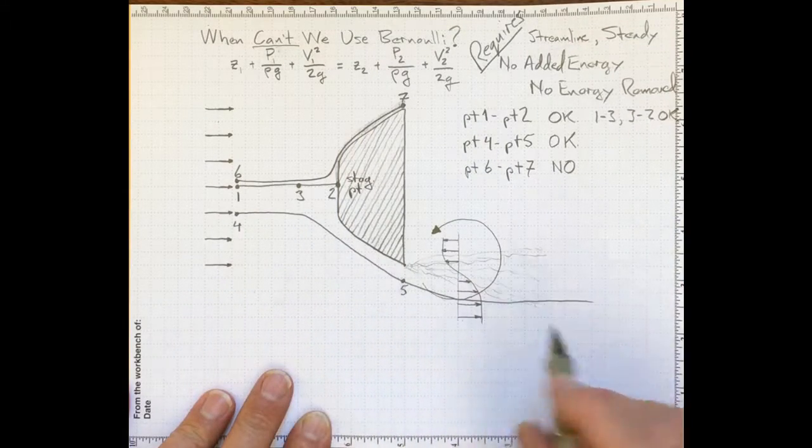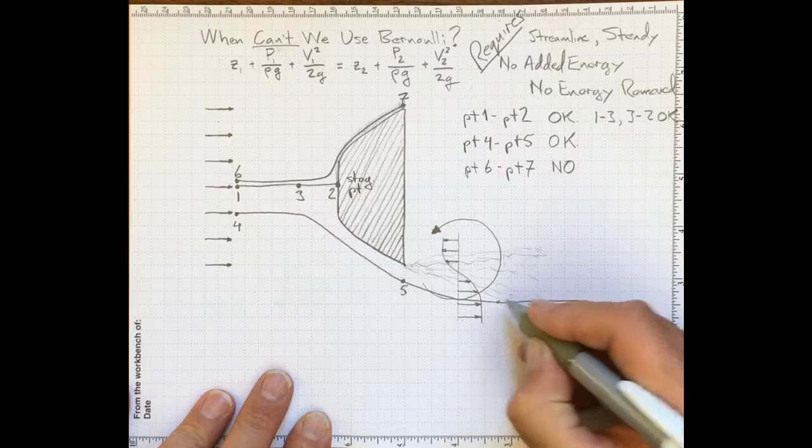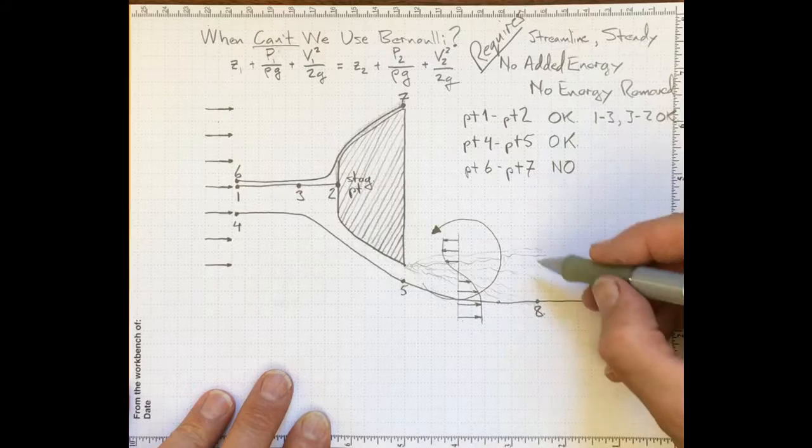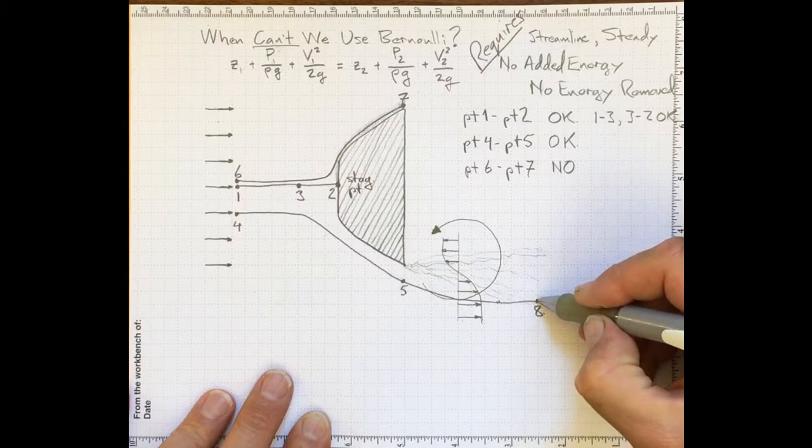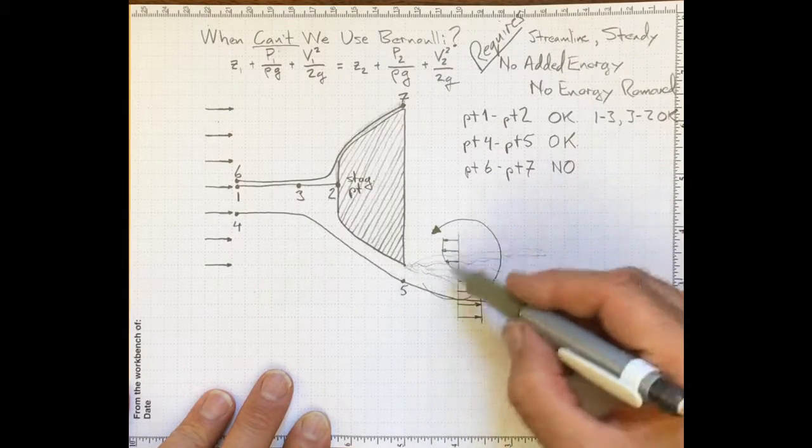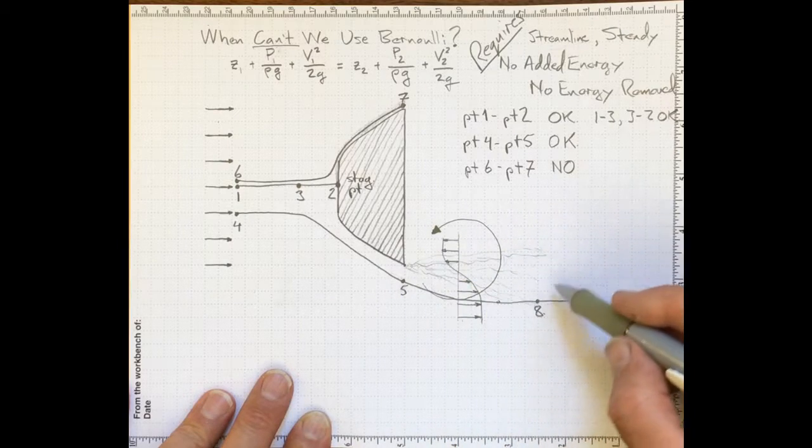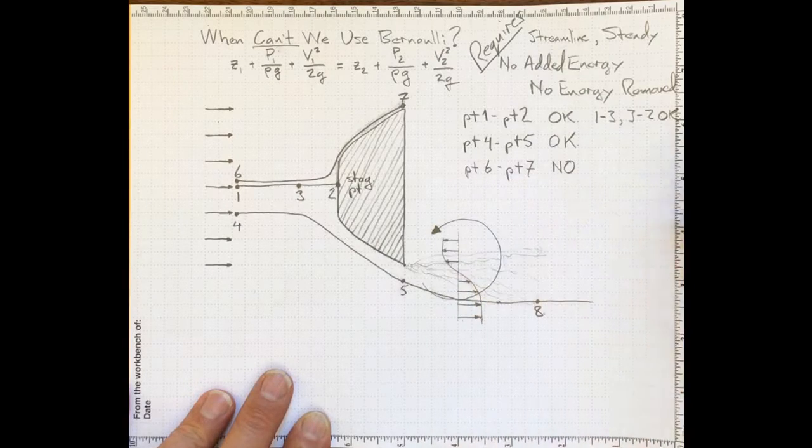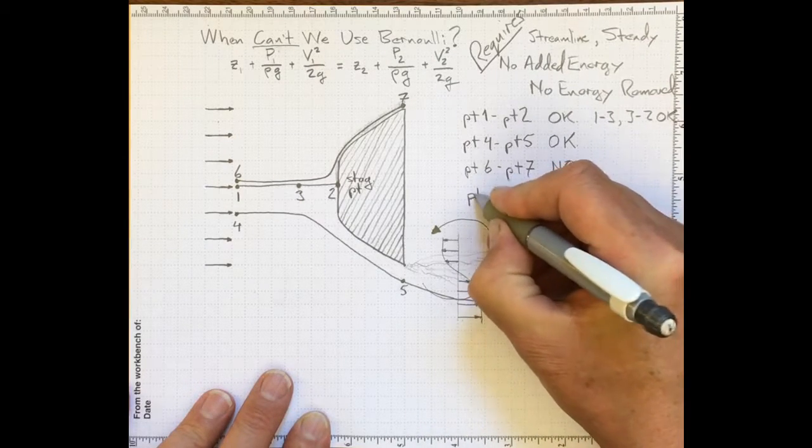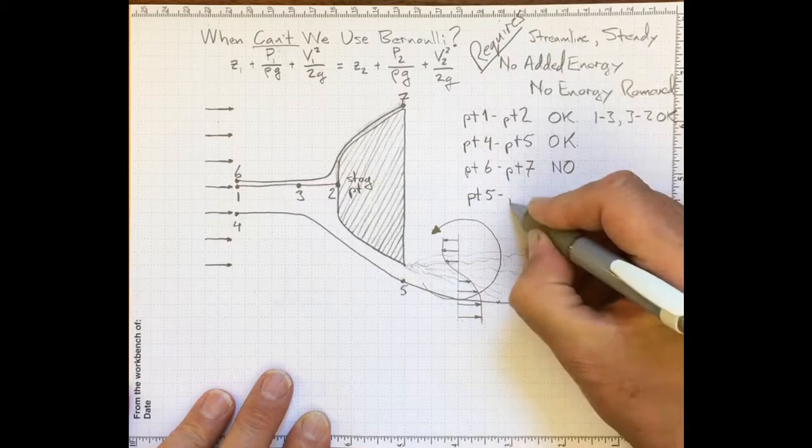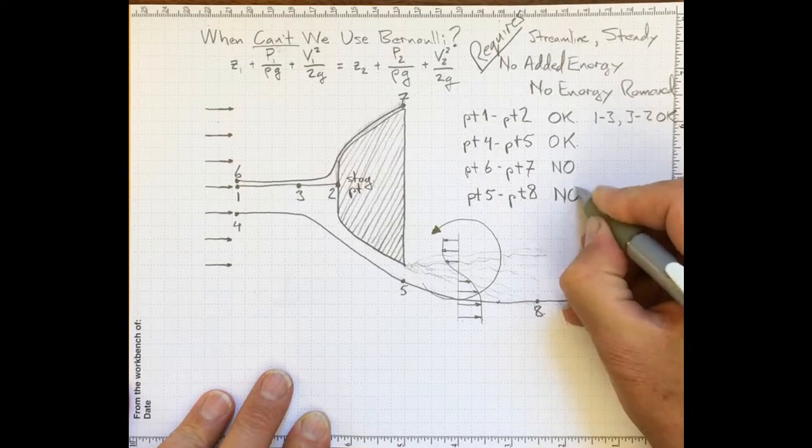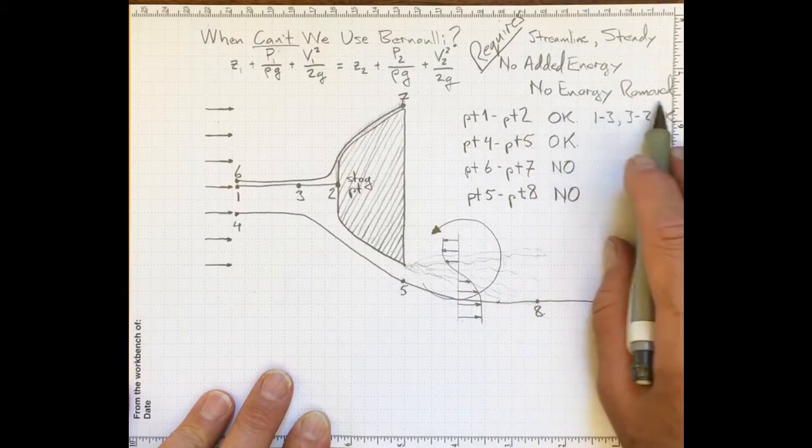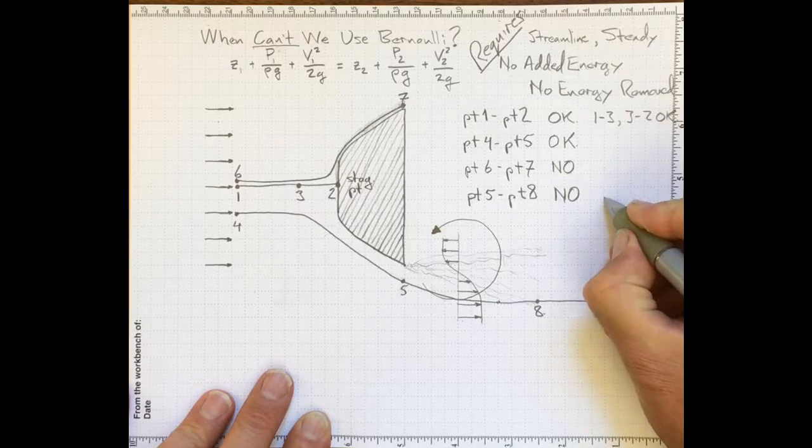How about if we go back to this streamline and consider a point out here somewhere, say, point eight. By the time we get to point eight, we're seeing the flow has been slowed down a fair bit due to interaction with this shear layer. Energy is being taken away from that particle and transported into this recirculation zone. So, going from point four to five, we're okay. Going from point five to point eight, no. Because we've got this shear layer that's taking energy out of the flow. So we're not obeying that requirement.